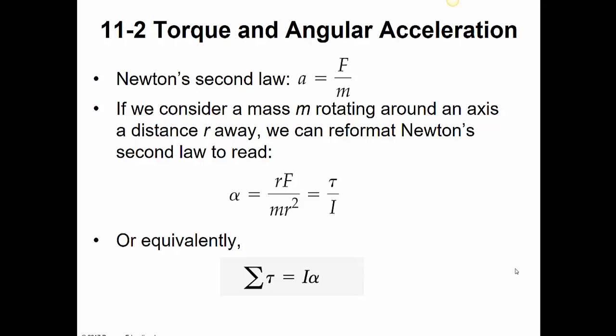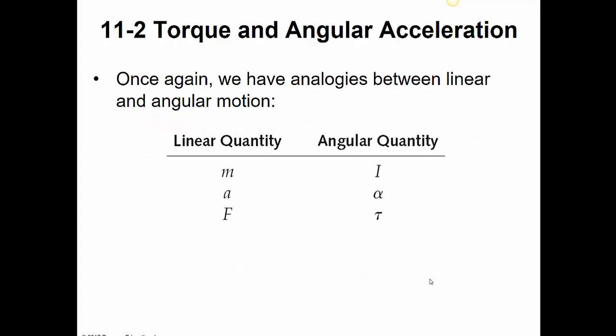And also, if we want to find the torque, the net torque, because remember, this is the net torque, just like this is the net force. The net torque is just simply I times alpha. So our mass is given by the moment of inertia. The acceleration is given by alpha, the angular acceleration, and F is given by tau, the torque.